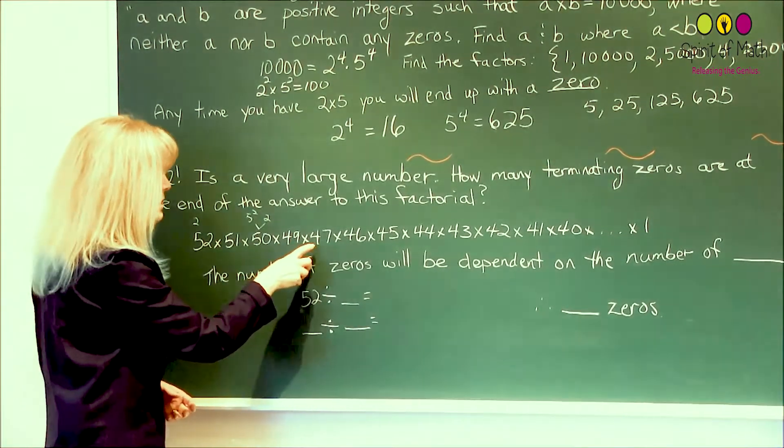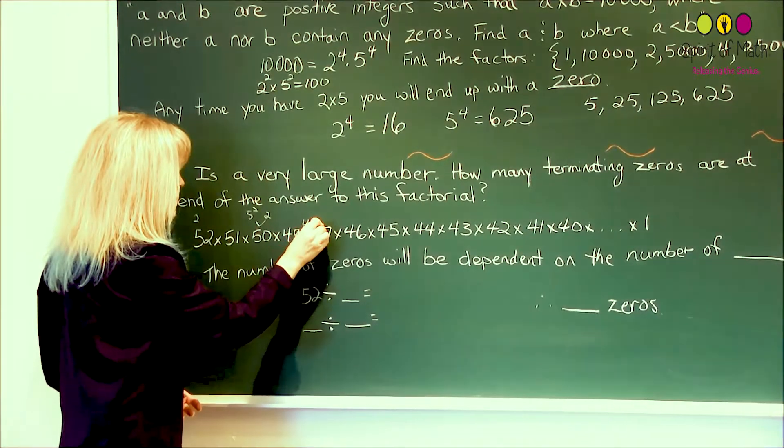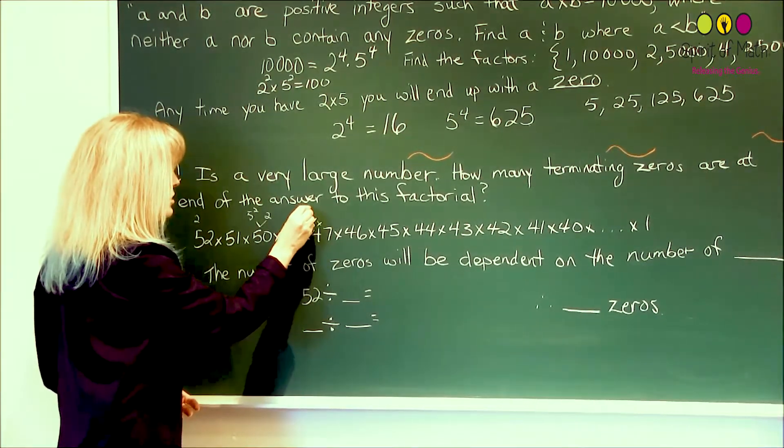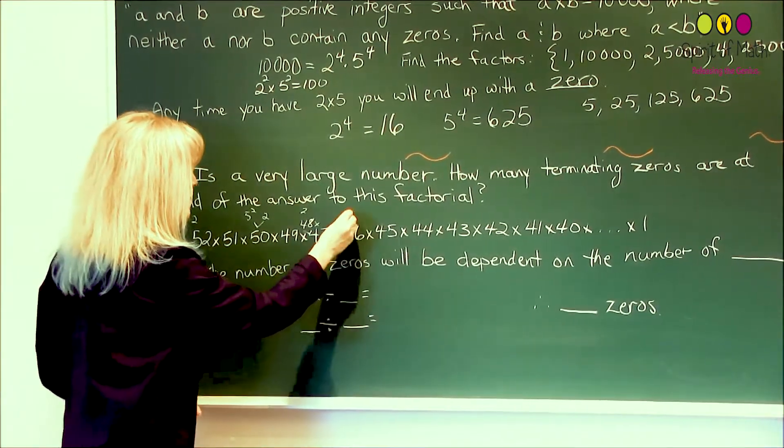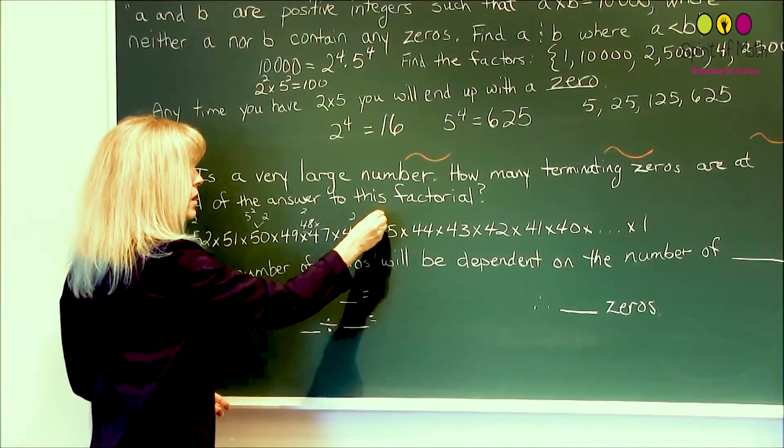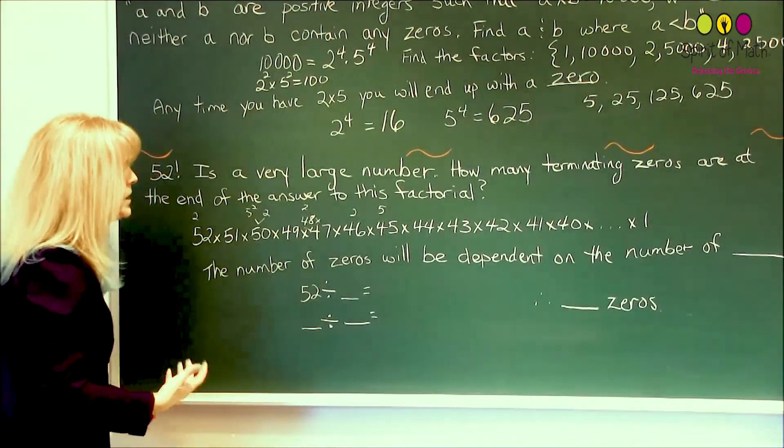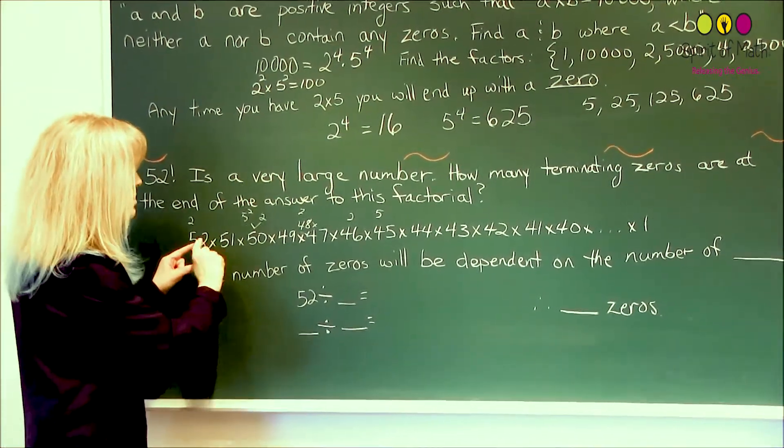49 doesn't. Oh, I missed a 48. That should go in here. 48 times 47, because 48 has a 2. 47 doesn't. 46 has a 2. It has no 5. Ah, here, this one has a 5.